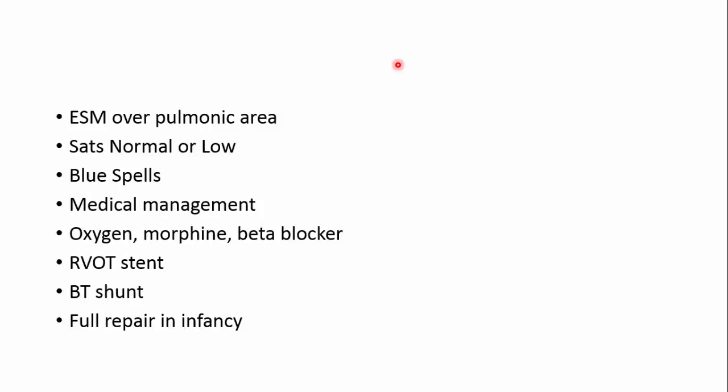You would get a murmur — usually an ejection systolic murmur over the pulmonic area, and that's not because of the VSD. It's usually because of the accelerated flow across the pulmonary artery. Saturations: in a pink Fallot child who has a reasonably good-sized pulmonary artery and a very mild degree of pulmonary stenosis, they would be quite pink and their sats are likely to be normal.